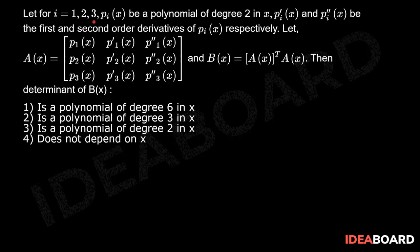Let, for i equals 1, 2, 3, p_i(x) be a polynomial of degree 2 in x. Let p_i'(x) and p_i''(x) be the first and second order derivatives of p_i(x) respectively. Let A(x) equal to the matrix [p1(x), p1'(x), p1''(x), p2(x), p2''(x), p3(x), p3''(x)] and B(x) equals A(x) transpose times A(x).